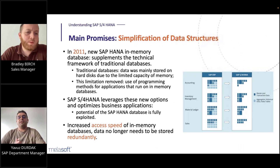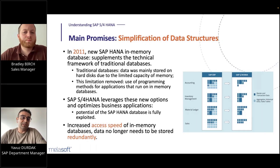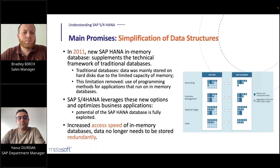The second promise is the simplification of data structures. In 2011, SAP implemented the new SAP HANA in-memory database, which supplements the technical framework of traditional databases. In traditional databases, data was mainly stored on hard drives due to limited memory capacity. This limitation is removed with SAP HANA, and programming methods for applications now run on in-memory databases. SAP S4 HANA leverages these new options and optimizes business applications to use the full potential of this database, increasing access speed and process efficiency extensively.